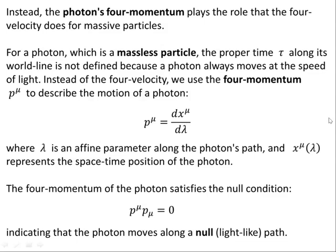So for a photon, which is a massless particle, the proper time tau along its world line is not defined because a photon always moves at the speed of light. Instead of the four velocity, we use the four momentum P with contravariant index mu to describe the motion of a photon. P mu is dx mu d lambda, where lambda is an affine parameter along the photon's path, and x mu of lambda represents the spacetime position of the photon. The four momentum satisfies the null condition, P mu times this condition here is zero, indicating the photon moves along a null light-like path.